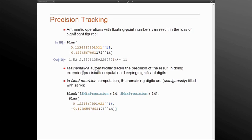This is achieved through precision tracking. Mathematica automatically keeps track of precision and reduces the precision when it detects these cancellations. It is common practice to do fixed precision computation, and in cases when such things happen, the remaining digits are somewhat ambiguously filled with zero.